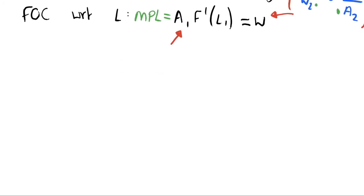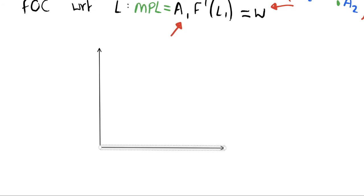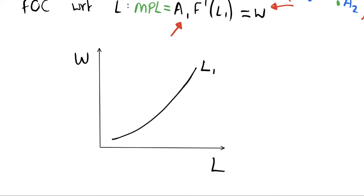Scrolling down to give some space, we can now draw up equilibrium in the labor market. Let's draw our axes — we have wages on the y-axis and the total amount of labor used in the economy on the x-axis, looking at period 1.